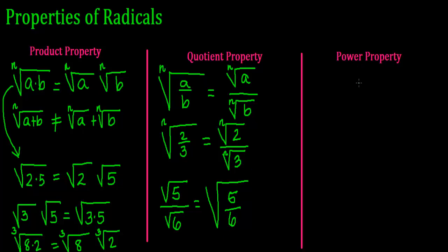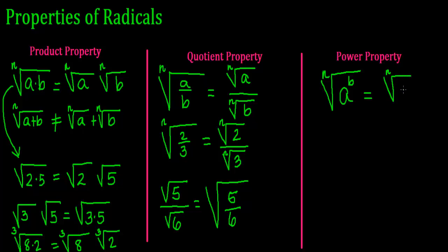My third property is called the power property. That means if I have the root — any root — the nth root of a power (meaning I have an exponent), a to the b power, it is equivalent to having a power of a root.